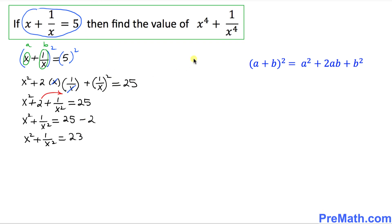Once again, since we are looking for x to the power 4, we are going to square both sides as well. Once again we're going to be using this formula. In this case, x squared is going to be a and 1 over x squared is going to be our b.